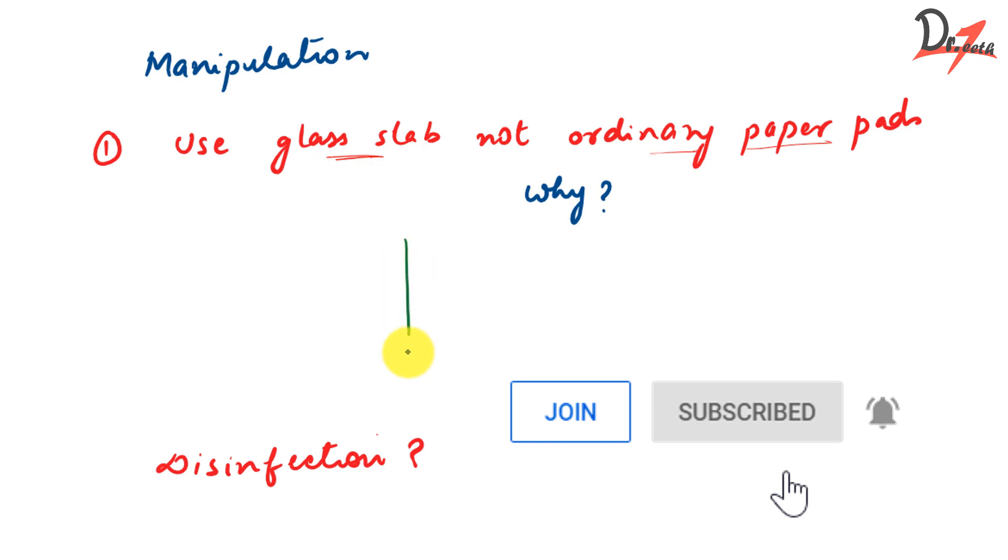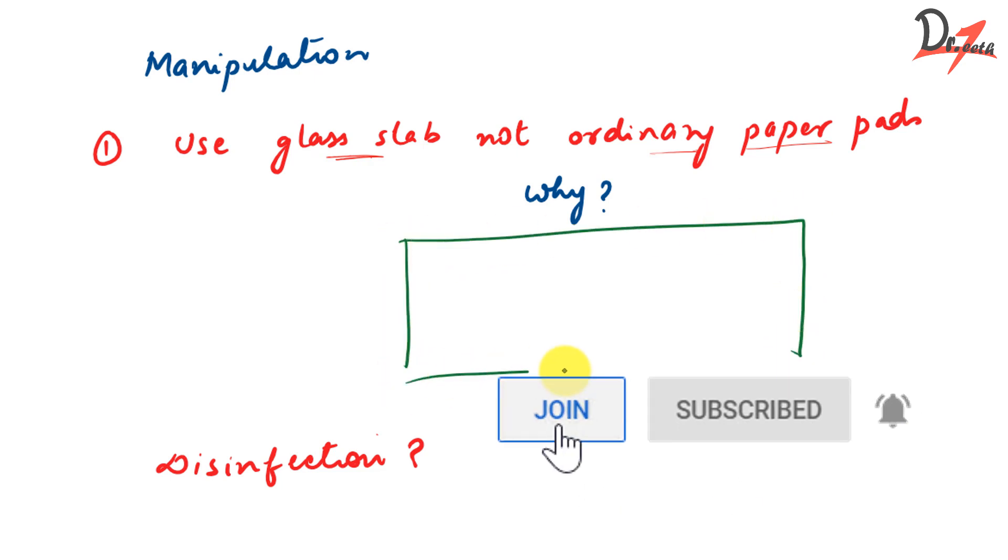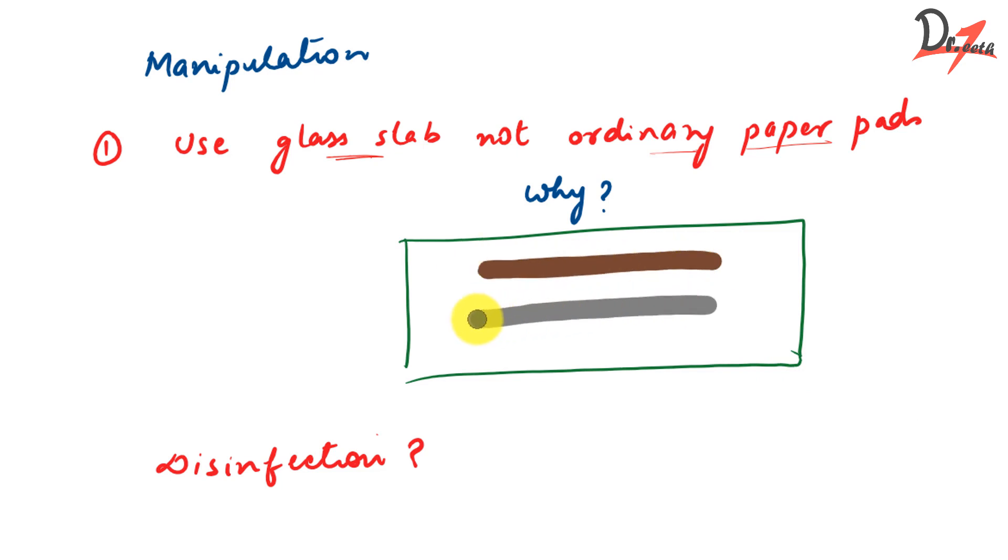So let me just quickly draw a glass slab here. So we will take equal quantity of the catalyst paste. I'm using a gray color for the base paste. It's white in color. Because we have to show it in a white background, I'm using a gray one. So we take equal length of the catalyst paste and the base paste. Then you take your spatula and you pick up the catalyst paste and you take this here and mix it with the base paste.